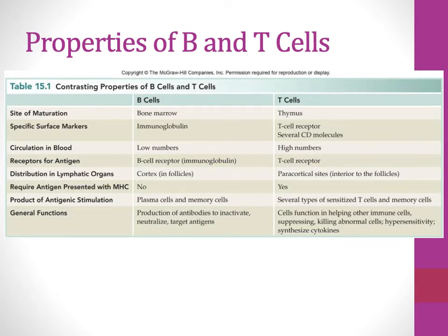Comparing B cells and T cells: the site of maturation is bone marrow for B cells and thymus for T cells. For surface markers, B cells have B cell receptors which are immunoglobulins, and T cells have T cell receptors. Both B cells and T cells have CD molecules — surface markers unique to each type — that can be used to identify which one they are.